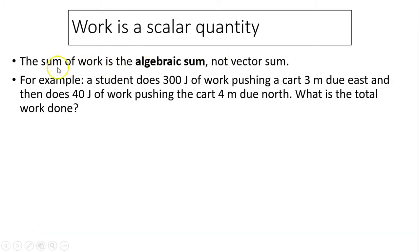Work is a scalar quantity. So the sum of work is algebraic sum, not vector sum. For example, a student does 300 joules of work pushing a cart 3 meters due east, and then does 40 joules of work pushing a cart 4 meters due north. What is the total work done? Well, this direction has nothing to do with work because work is the scalar quantity. To find the total work, you simply add 340. The total work done is 340 joules.